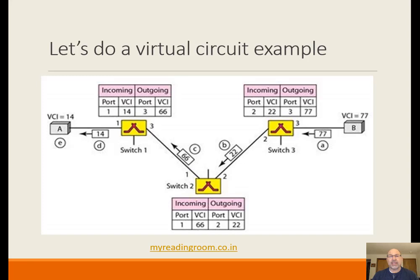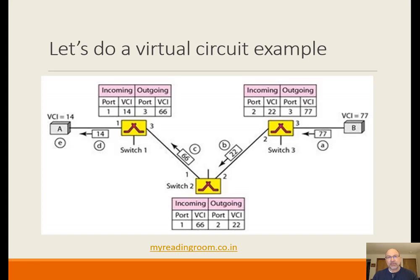VCI 77 incoming on port 3 maps to VCI 22 outgoing on port 2. It goes down to switch 2, which receives VCI 22 on its incoming port 2 and knows that maps to 66 outgoing on port 1. There could be a whole bunch of tags incoming on switch 2 on that same link but going to different destinations. That's why the outgoing port matters — when mapping VCI to VCI, we need both the incoming port and outgoing port.